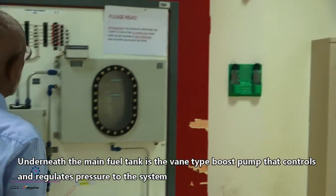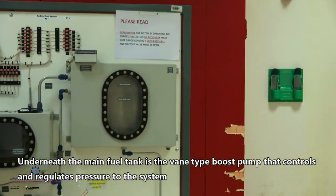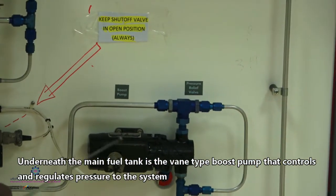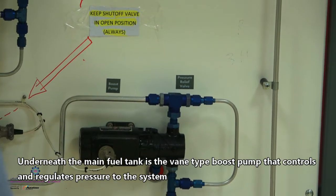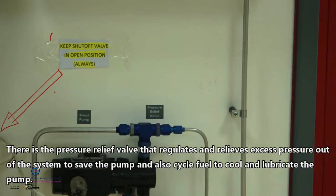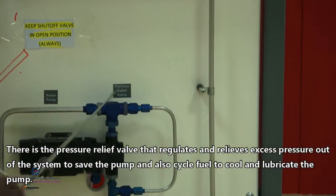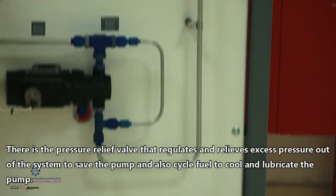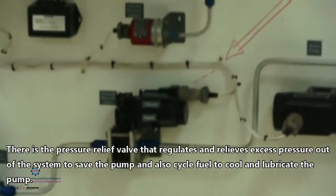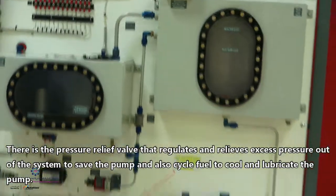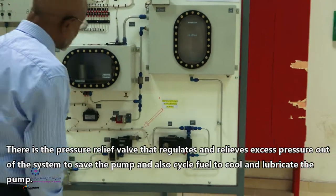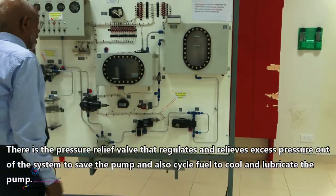Underneath the main fuel tank, here we have a boost pump. The boost pump is a vane type and this boost pump also controls and regulates the pressure to the system. By the pump, the boost pump, we have a relief valve and this relief valve will help to relieve if there is a buildup pressure around the pump. To save the pump also, it cycles the fuel. When it cycles the fuel, it cools the pump, it lubricates the pump as well and also relieves the pump.